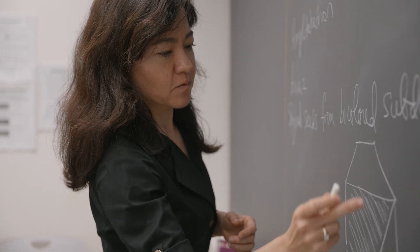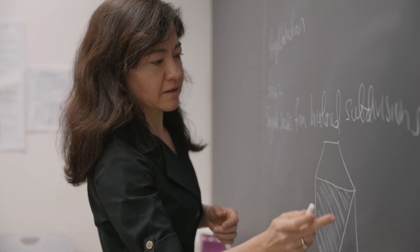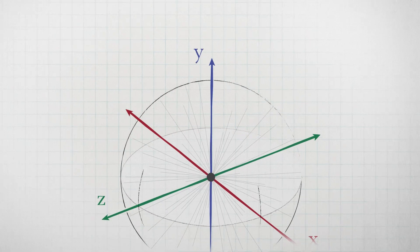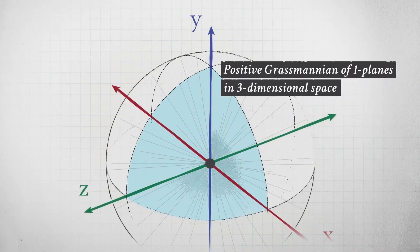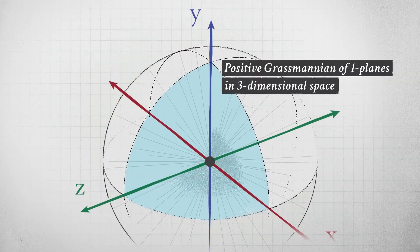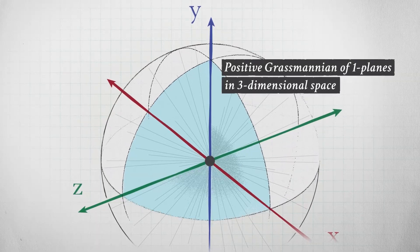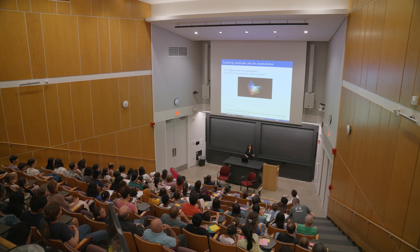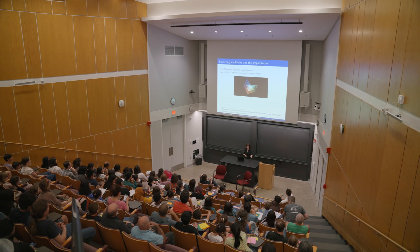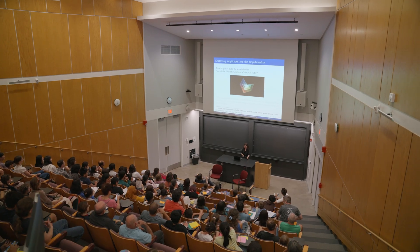The Grassmannian is a very old mathematical object, but the positive Grassmannian is a much newer mathematical object that was first studied in the late 1990s and early 2000s. I found the structure of this space very appealing.